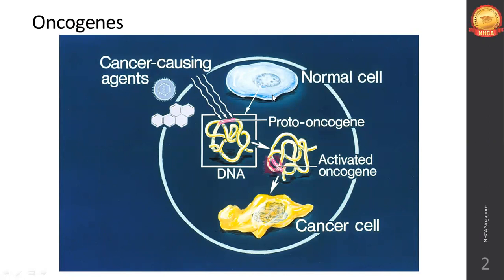Before jumping into the diet, let's discuss briefly about cancer. You can see here a normal cell, the blue one on top, with normal genes, normal DNA and RNA structures. Cancer-causing agents - can you name a few in the chat box? What are the things which may lead to cancer?